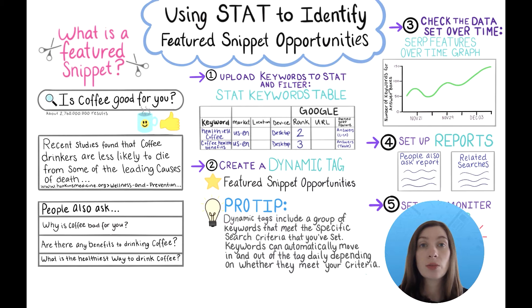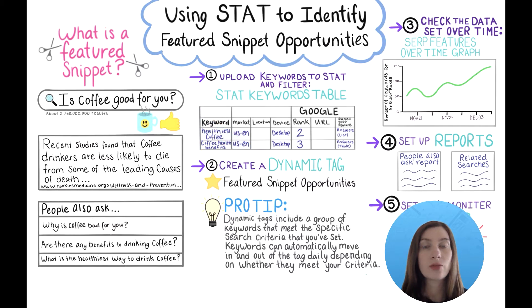For example, if you did a search for something like, "Is coffee good for you?", you're going to see an answer box saying, "Recent studies found that coffee drinkers are less likely to die from some of the leading causes of death."